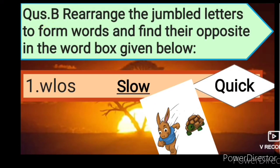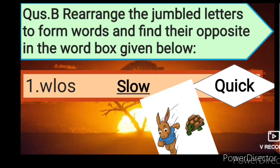The question is: rearrange the jumbled letters to form words and find their opposite in the word box given below. So in this question some jumbled letters are given. What we have to do is rearrange these letters so that we will find a word, and after that we will find the opposite of that word.